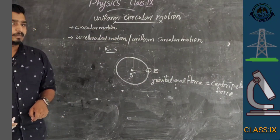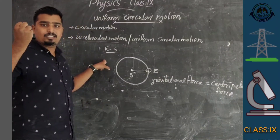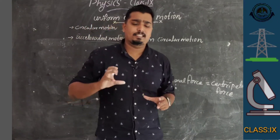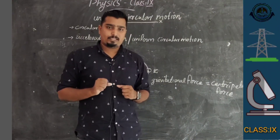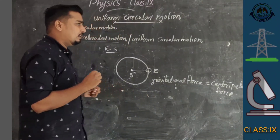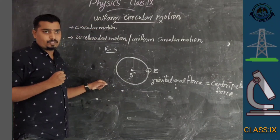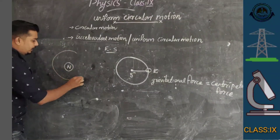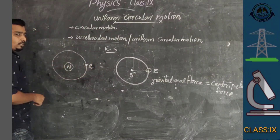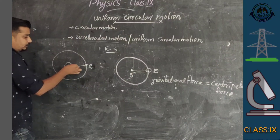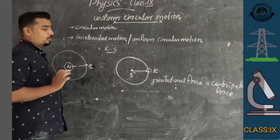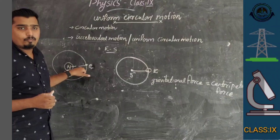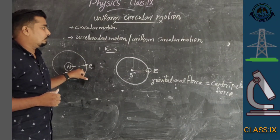Another example: in the case of electrons revolving around the nucleus, the centripetal force is the Coulomb force, also called nuclear force. The force between the nucleus and electron is called Coulomb force, and here centripetal force equals Coulomb force. These are examples of uniform circular motion.